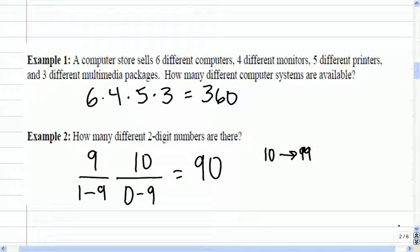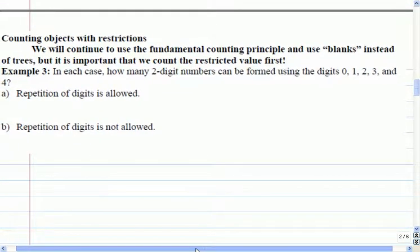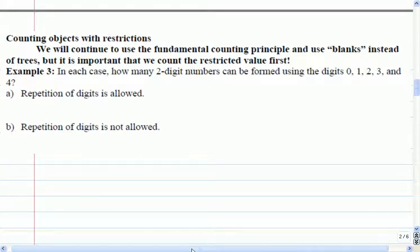Let's move on then. We're getting the hang of the fundamental counting principle. Let's change the problem a little bit. Let's count some objects with restrictions, meaning it's not just any five printers or six computers. We're going to use only certain parts of the problem. For example, how many two-digit numbers can be formed if I've got the numbers from 0 to 4? So 0, 1, 2, 3, and 4. How many two-digit numbers can I make now? There's the condition: repetition of digits is allowed, meaning numbers like 22, 33, 44. Those are all fine.